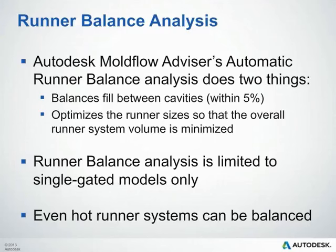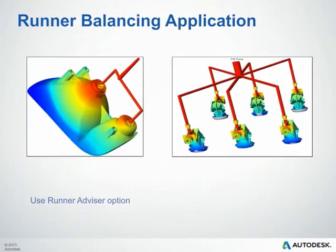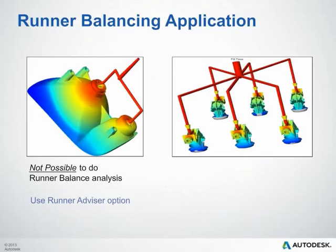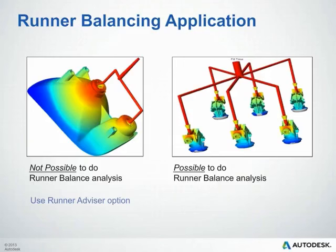There are a few applications that may not be suitable for the runner balance analysis. The image on the left is not possible to run a runner balance analysis on, while the runner balance analysis can be run on the part displayed in the image on the right. The runner balance analysis is meant for balancing flow between cavities, not within a single cavity.